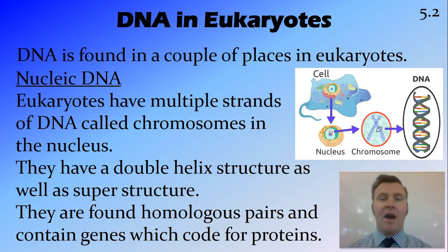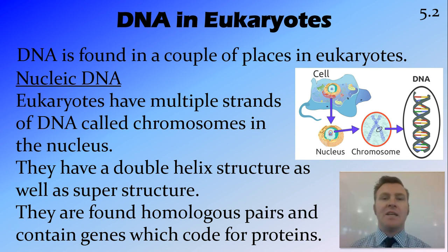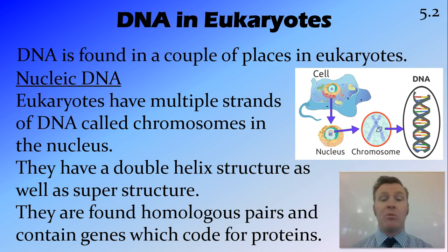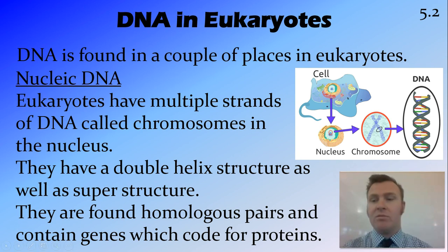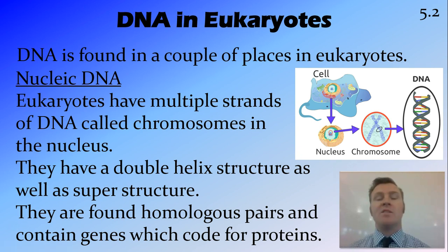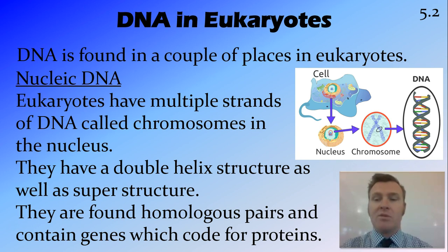Starting with eukaryotes: there are two main places that we find DNA in eukaryotes. The main place is in the nucleus, and we call this the nuclear DNA. This is found in strands called chromosomes, and these chromosomes have a double helical structure. At the DNA level, those bases wrap around each other in a double helical structure, and there's also a superstructure of them wrapping around proteins called histones into chromosomes.